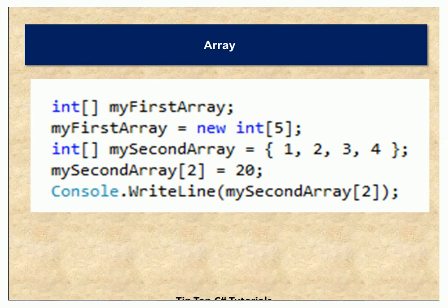Array allocates its elements in contiguous blocks in memory, meaning consecutive locations in memory. Arrays are of fixed size — once you declare an array in C-Sharp, you will not be able to add more elements to it. That being the limitation, array is suitable for use cases where you have fixed-sized datasets.